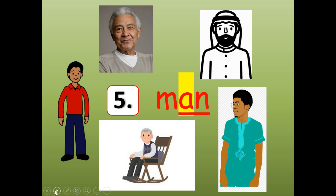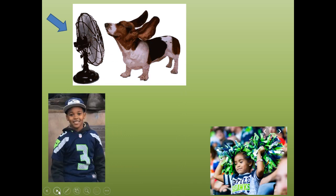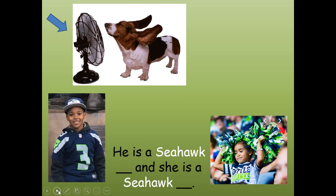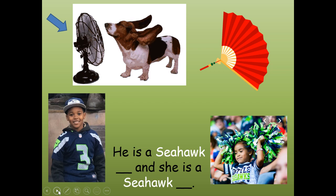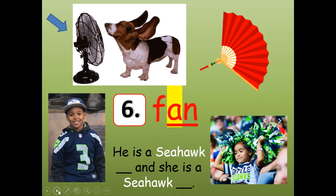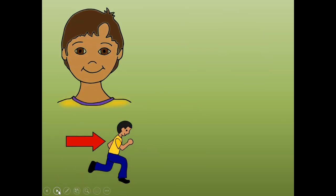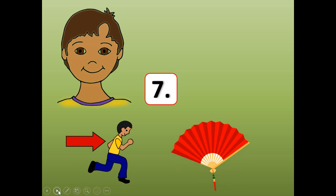And the next word is going to rhyme with man. Number six. He is a Seahawk blank. And she is a Seahawk blank. Oh, and there's something to make you cool, to wave in front of your face. What are those things? F-A-N. Man. They rhyme. Stretch it out. F-A-N. Shrink it. F-A-N. Spell it. F-A-N.